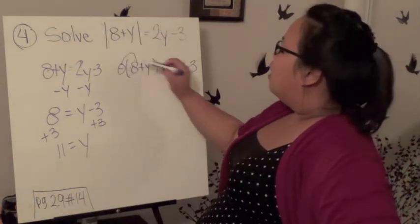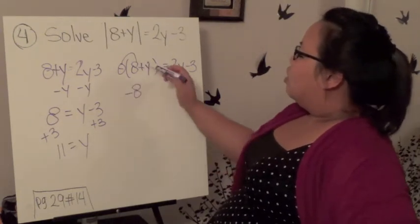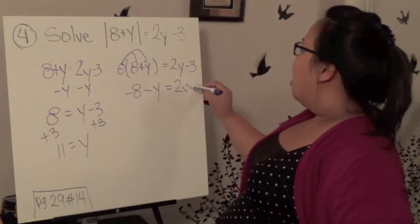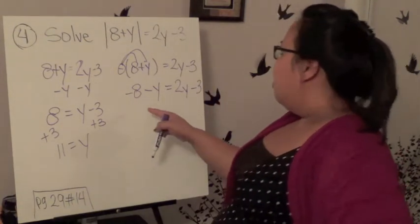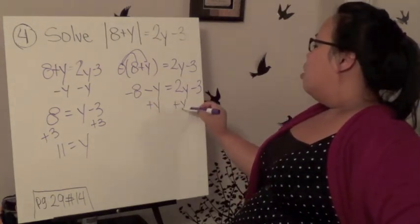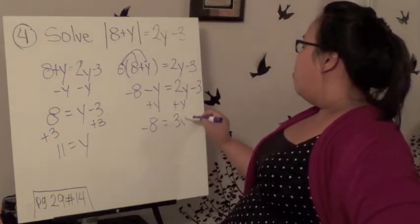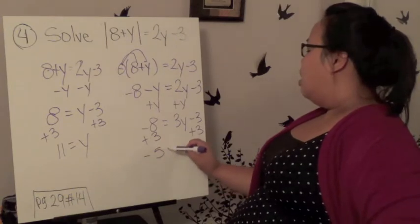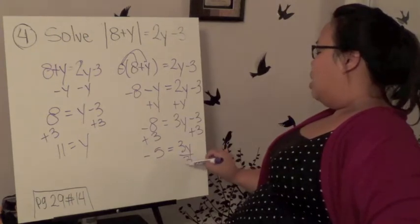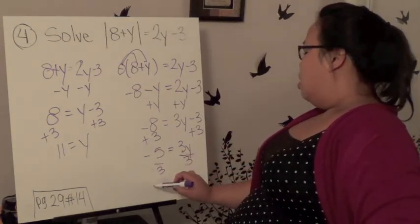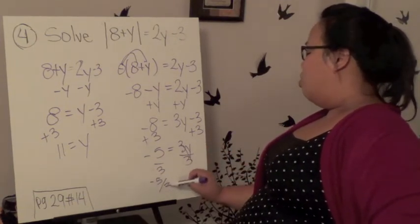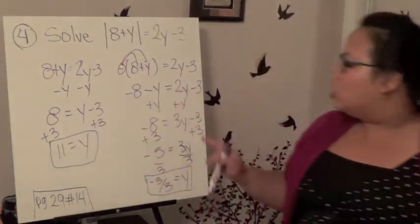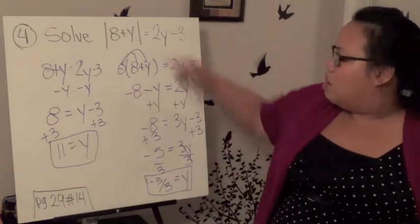The next one, the negative goes here. We have negative 8 minus y equals 2y minus 3. Then we add y, which gives us negative 8 equals 3y minus 3. Then we add 3 to both sides, giving us negative 5 equals 3y. Then I divide by 3 on both sides and end up with negative 5 over 3 equals y. It's okay if I have a fraction. My two answers are 11 and negative 5 over 3. Please make sure you check them and tell me if both work when you put them back.